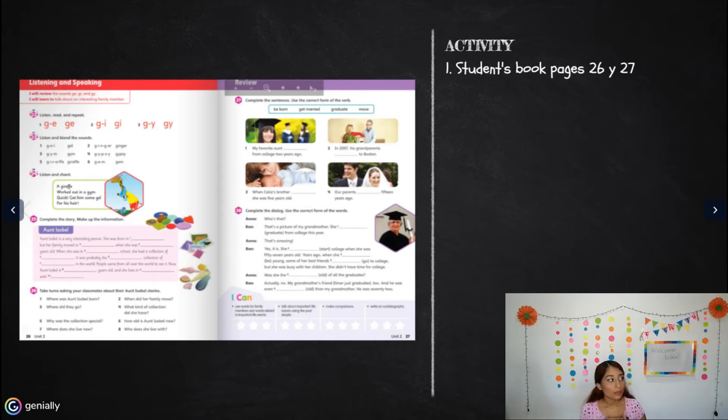You can say she was born in Germany, she was born in France, she was born in Russia. But her family moved to Mexico, to Australia, to United States when she was 7, 10, 20, 13, 4 years old. And when she was in high school or primary school, she had a collection of, you can say a collection of spiders, a collection of toys, a collection of butterflies, a collection of erasers also.